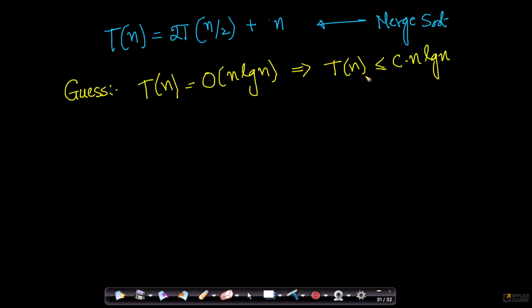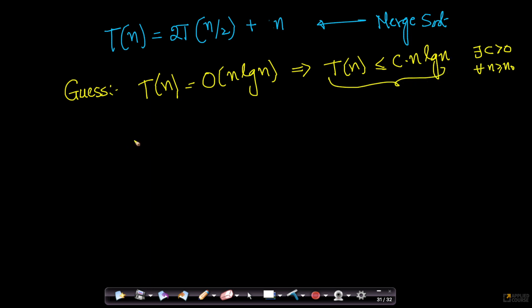What do we need to prove? There exists some c greater than 0 such that T(n) ≤ c·n·log n for all n ≥ n₀. This is the definition of Big O. So now we want to prove that T(n) ≤ c·n·log n.